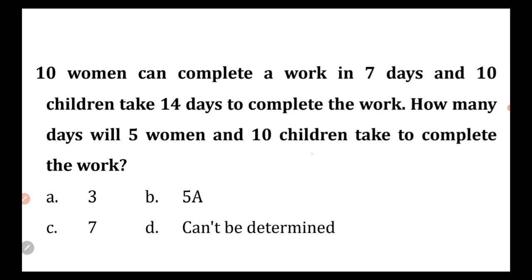Next: 10 women can complete a work in 7 days and 10 children take 14 days to complete the same work. So we have women and children — 5 women plus 10 children.